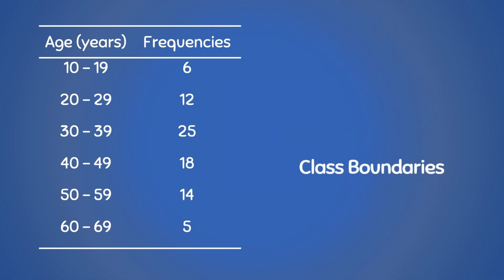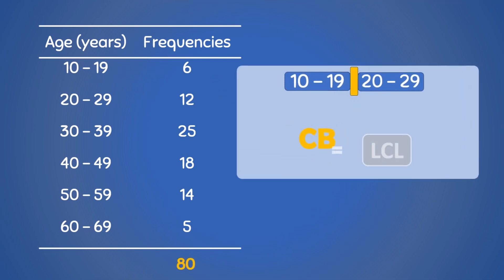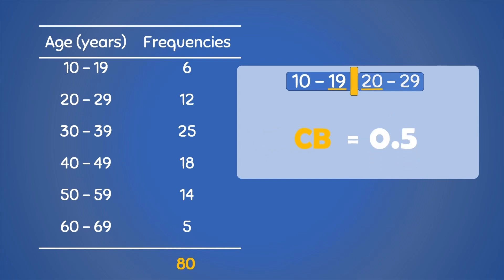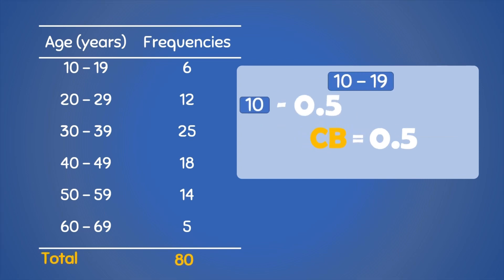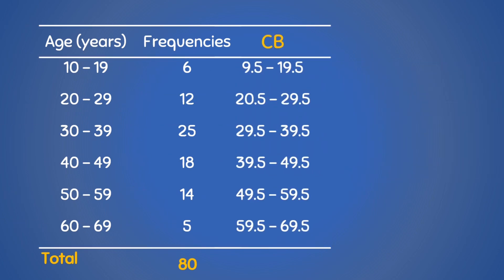The first thing to do is to compute the class boundaries. The class boundary is the midpoint between one class and the next. To find the class boundary, we subtract the upper class limit of the first class from the lower class limit of the next class, and divide by 2. The upper class limit of the first class is 19, and the lower class limit of the next class is 20. So 20 minus 19 is 1, divided by 2 gives us 0.5. So we subtract 0.5 from the lower class limits and add 0.5 to all the upper class limits, giving us a first class boundary of 9.5 to 19.5. We do the same for all other classes.